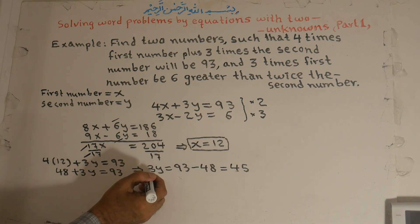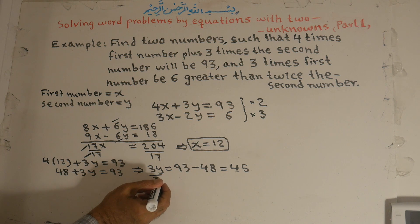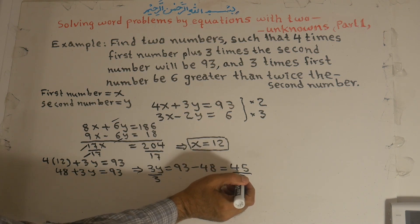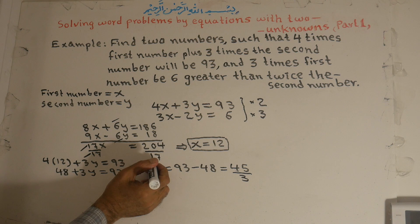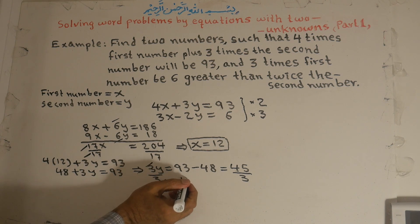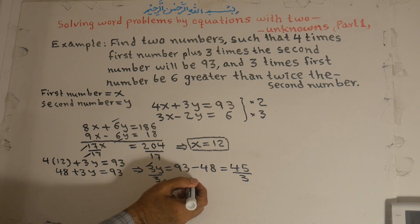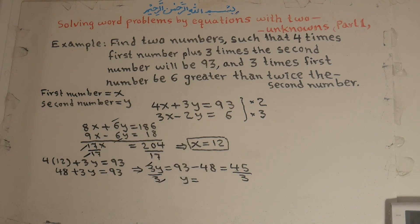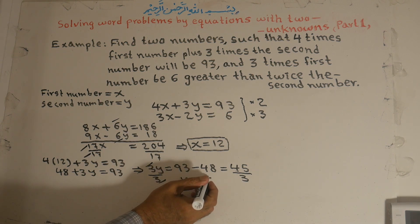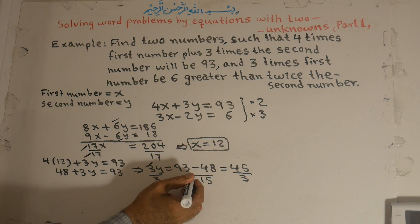Now we divide both sides by 3. The 3 cancels, leaving only y on the left. Y is equal to 45 divided by 3, which is 15. So y is equal to 15.